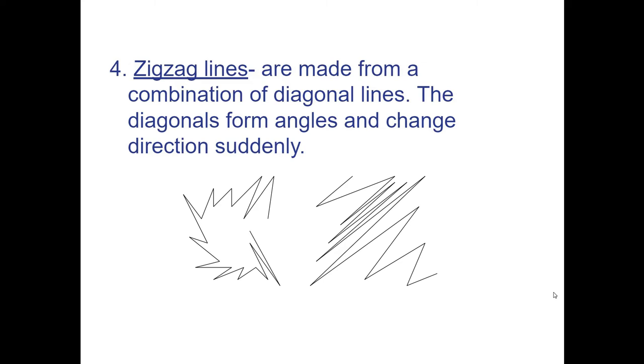Number four, zigzag lines. You would think of these as lightning bolts or action lines for electricity. Zigzag lines are a combination of diagonal lines that change in their angle. They could be very close together or stretched out with bigger space between them.